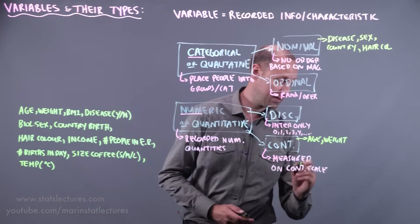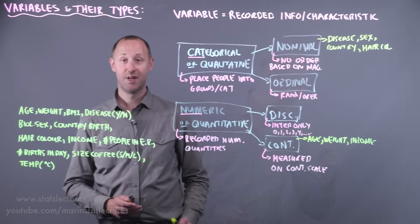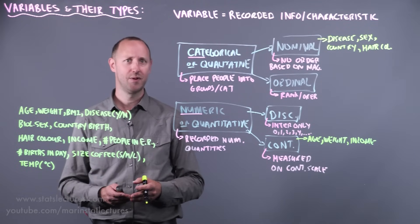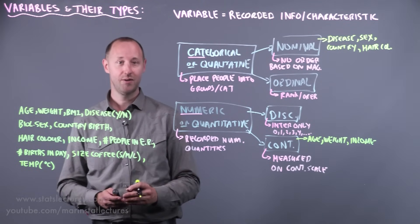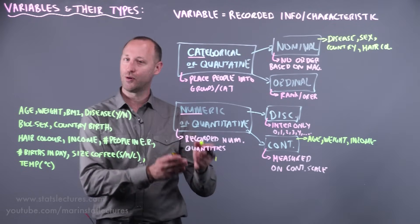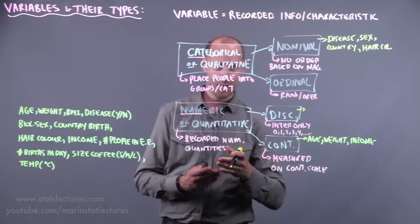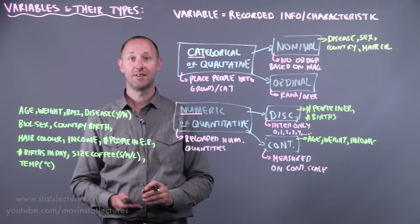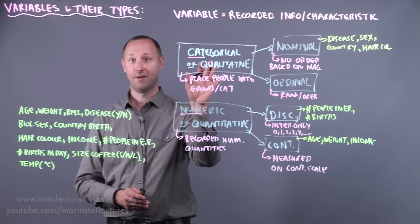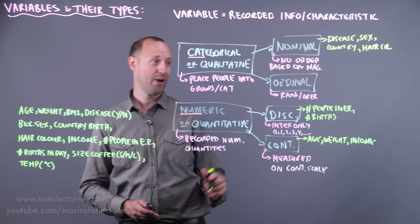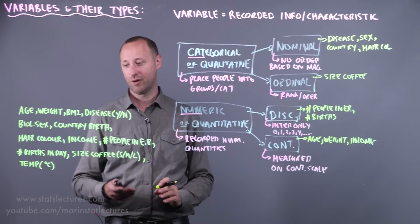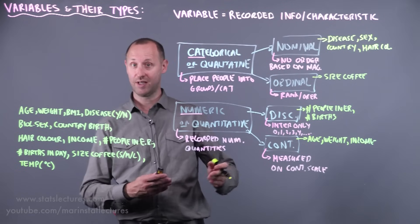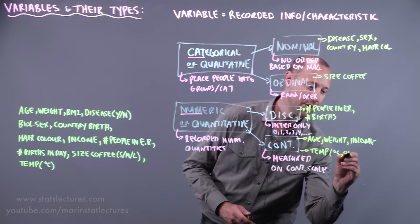Country of birth and hair color are both categorical and nominal — there's no natural ordering based on size or magnitude, even though you could order them alphabetically. Income is a continuous numeric variable. The number of people in the emergency room — or arriving in a day — is a numeric, discrete variable: it will be 0, 1, 2, or 3, and in theory can go to infinity. The number of live births in a day in a hospital is similarly discrete. Coffee size (small, medium, or large) is categorical and ordinal, with a clear ordering. Temperature in degrees Celsius or Fahrenheit is numeric and continuous.